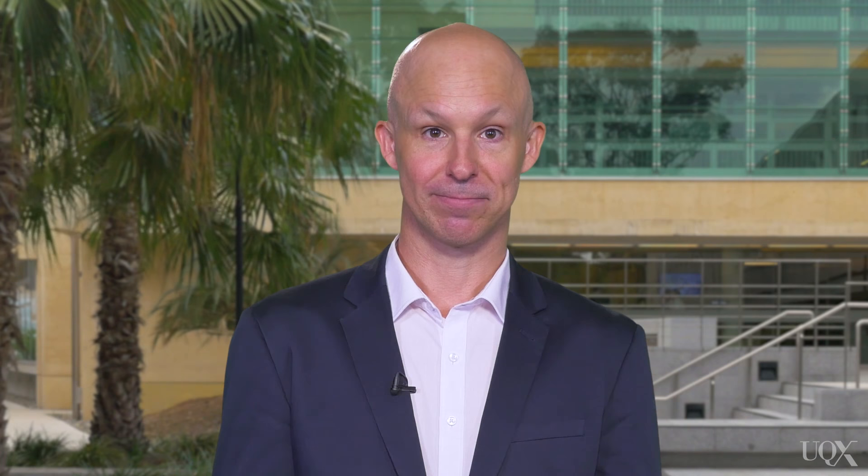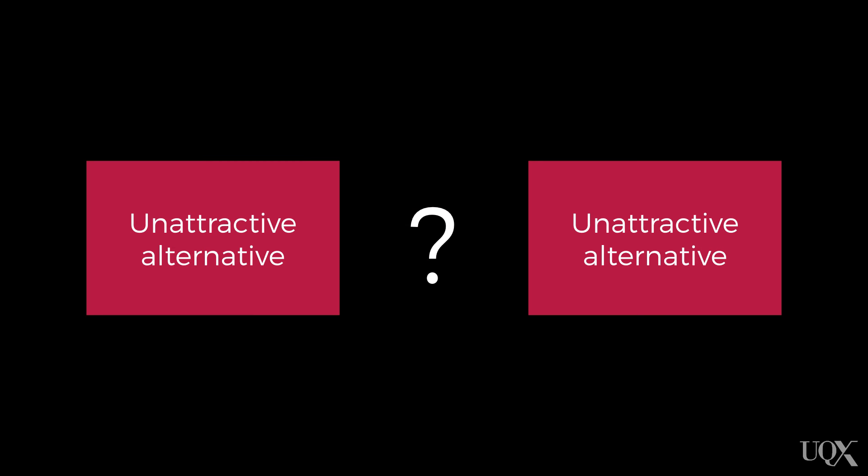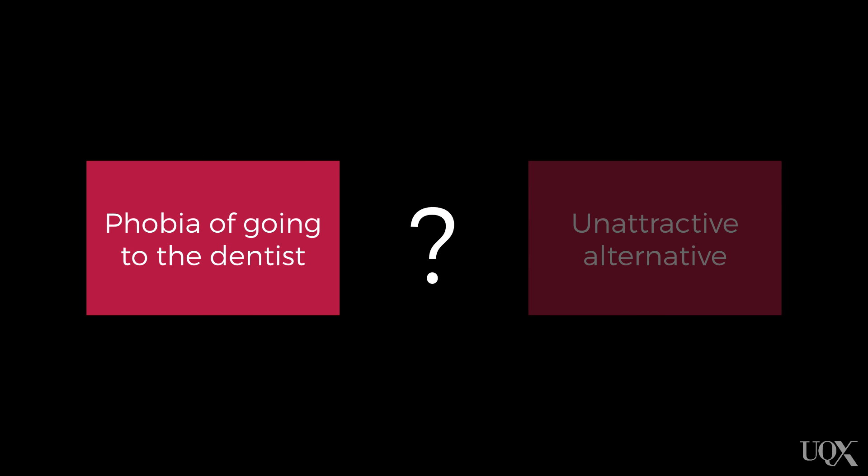What if the conflict is slightly different? The second type is the avoidance-avoidance conflict, where we have to choose between two really unattractive possibilities. Imagine you've got a very strong phobia of going to the dentist, but at the same time you've noticed you've got a really bad toothache. You can either put up with the toothache and not have to confront going to the dentist — meaning lots of pain — or you can face your fears and go to the dentist. Both outcomes are pretty unattractive, and no matter which one you choose, you're unlikely to enjoy the experience at all. This is the most stressful type of conflict.